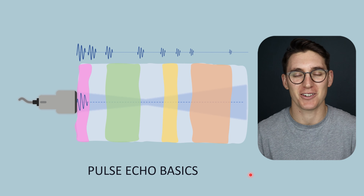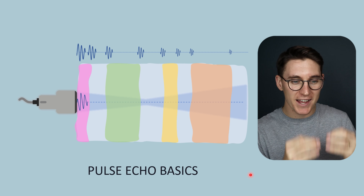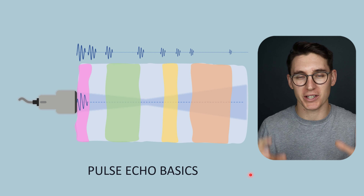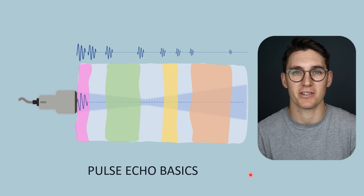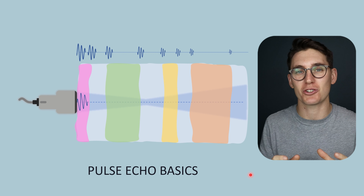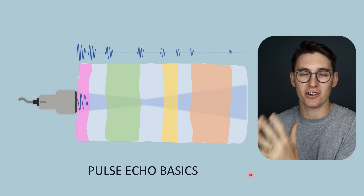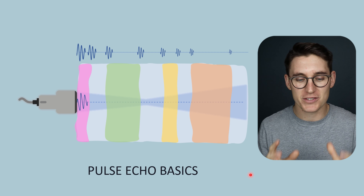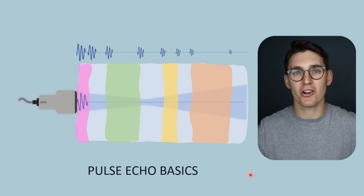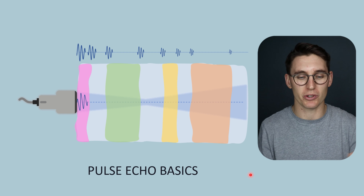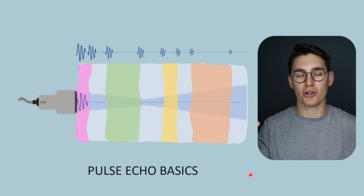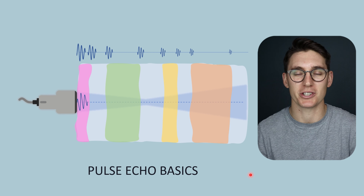Hello everybody and welcome back. In the previous talks we've been looking at the actual sound wave itself and the various different parameters we can use to describe it. Now I want to take a look at how we actually go about creating an ultrasound image that we can display on our machines. A lot of textbooks leave this topic till the end, but I want to show you the broad overarching view first before we dive into these individual components.